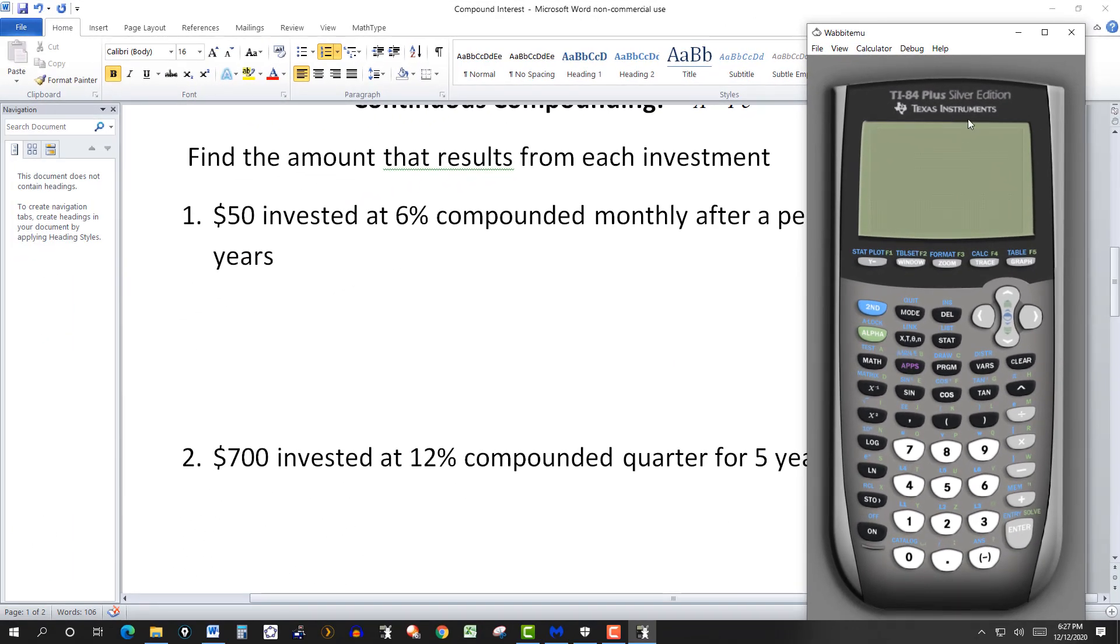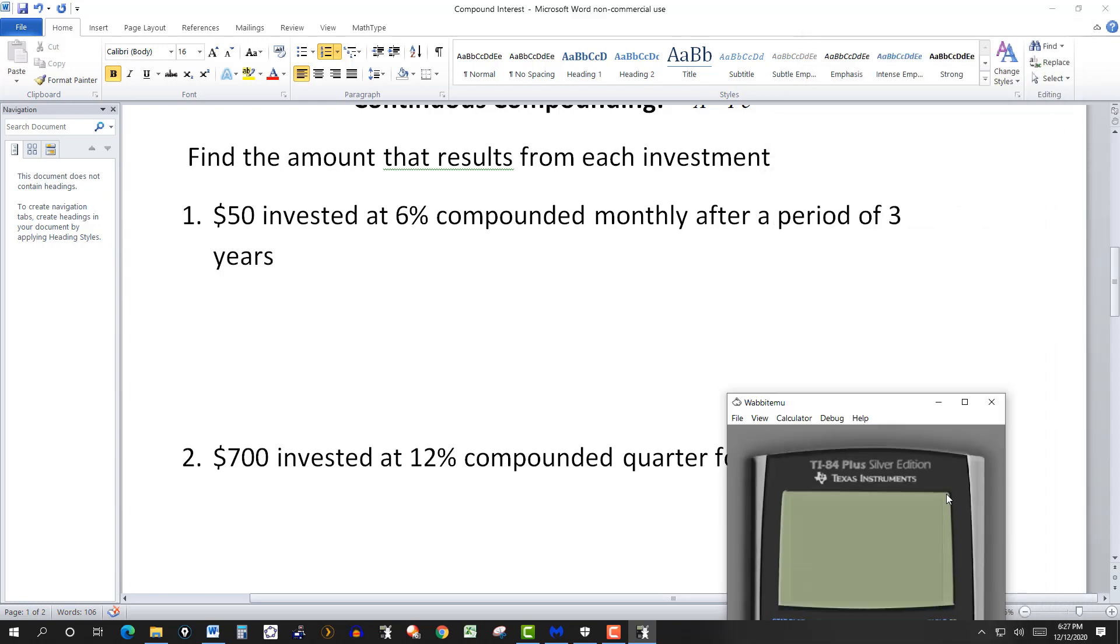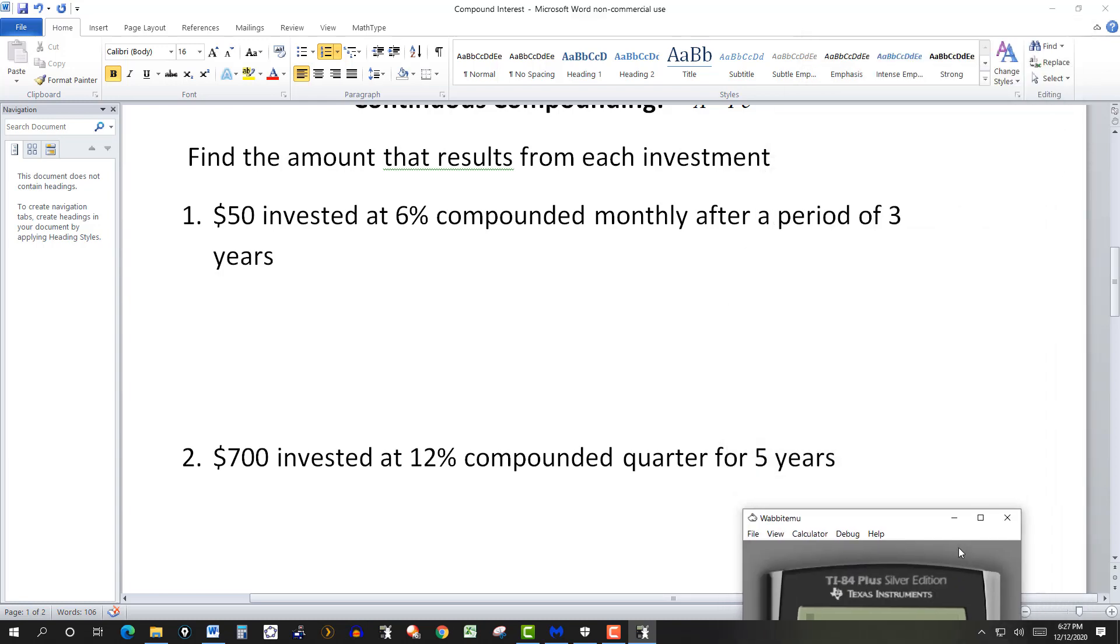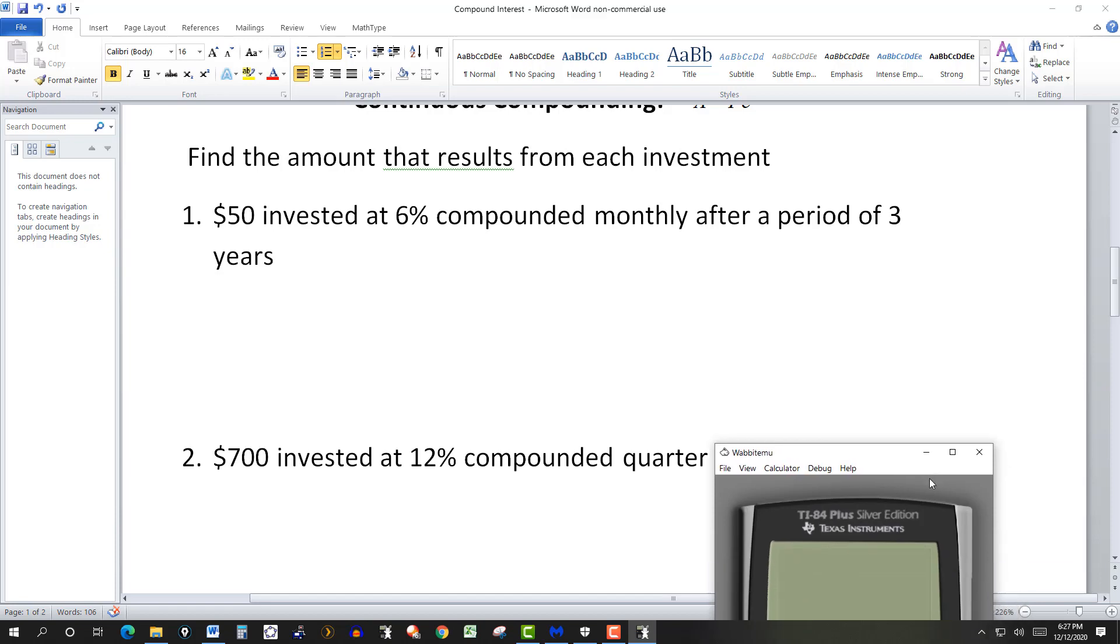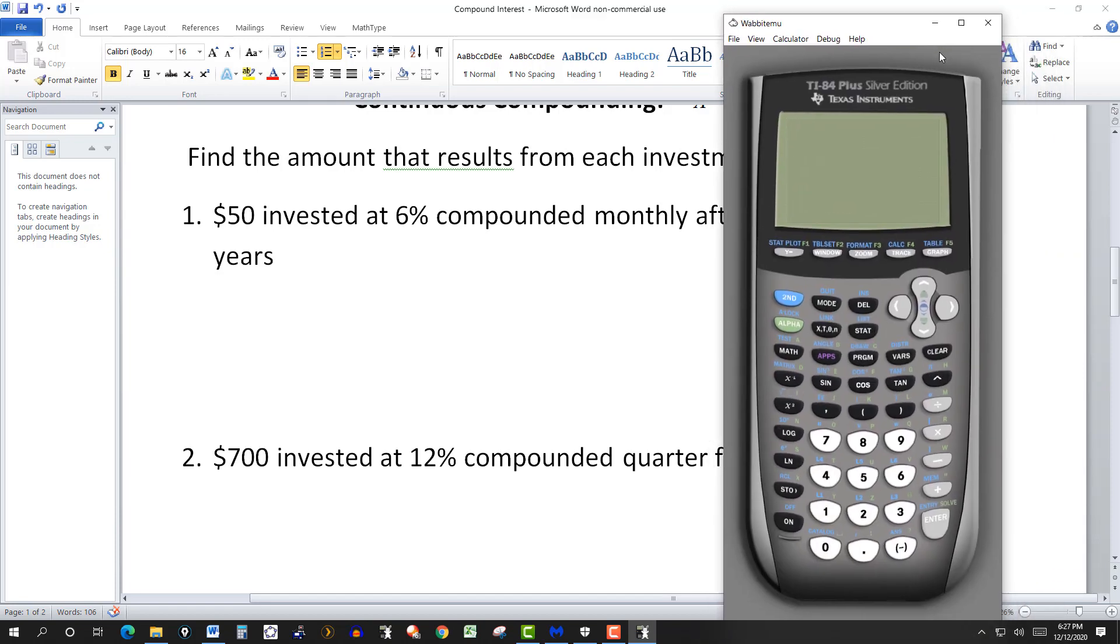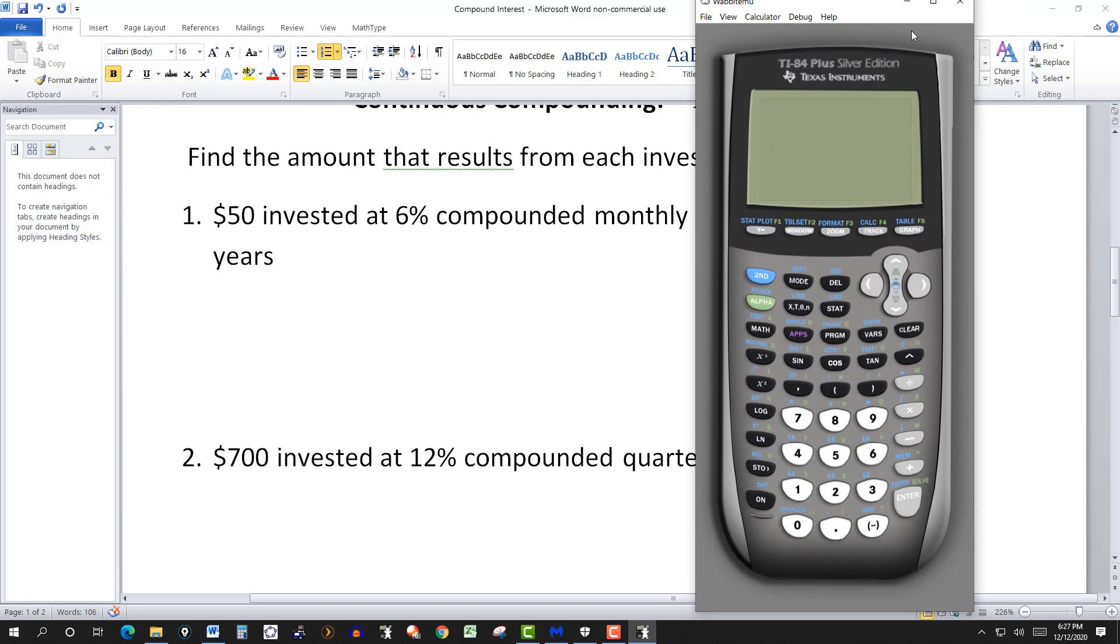For the next one, we have $700 invested at 12% compounded quarterly for five years. Those are the values you're going to plug into your formula.